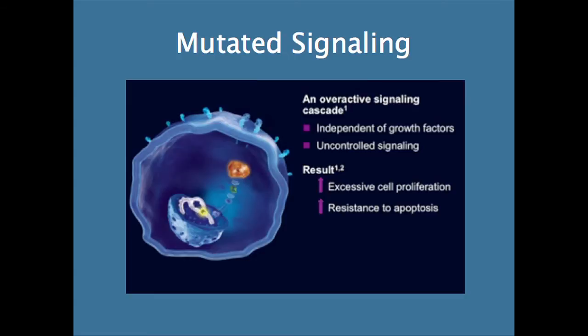So what happens when you have mutated BRAF? Well, mutated BRAF doesn't act normally. It's not under the normal controls of growth and development in the body. It just continues to signal the pathway — it's never shut off. So it continues to make daughter cells, continuing to stimulate the production of new cells through the activation of MEK, ERK, and then the signal into the nucleus.